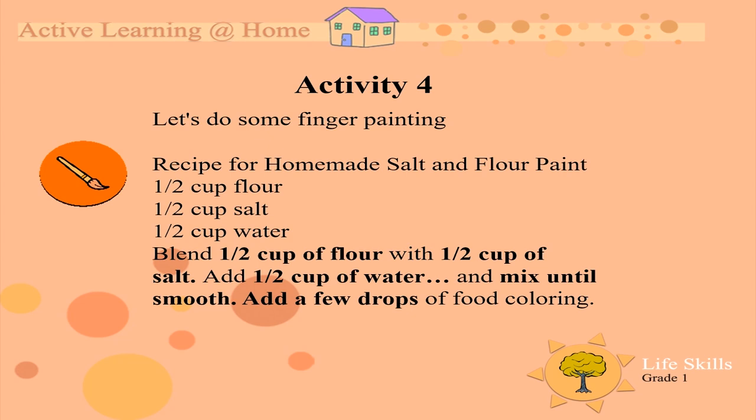Let's do some art. My art today is about finger painting. The recipe for homemade salt and flour paint is a half a cup of flour, a half a cup of salt, and a half a cup of water. Blend the flour, salt, and water and mix them together. You can add a little bit of food coloring to make different colors. I'm sure by now you might know what the primary colors and the secondary colors are — if you don't, it is good to go and look those up.